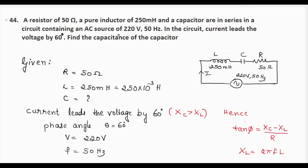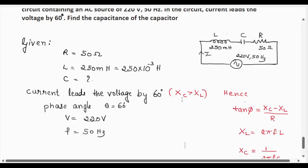Here it is given current leads the voltage by 60 degrees, so Xc (capacitive reactance) is greater than inductive reactance. Voltage is given as 220 volts and frequency is 50 hertz. Since Xc is greater than XL, we can write tan φ = (Xc - XL) / R. We know the value of φ, the phase angle is given as θ = 60 degrees.